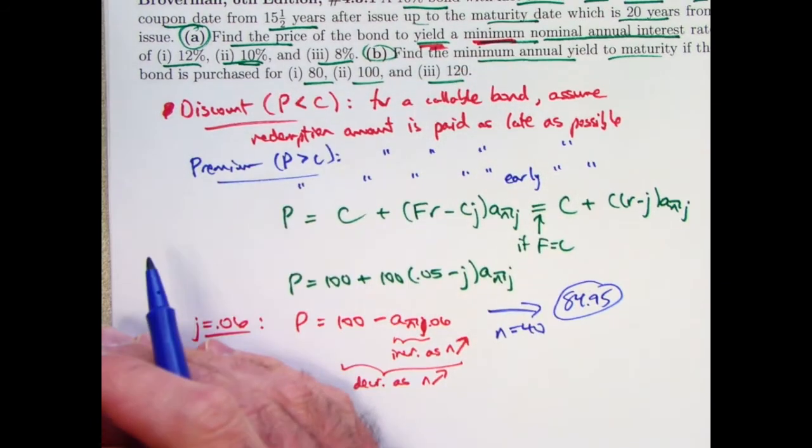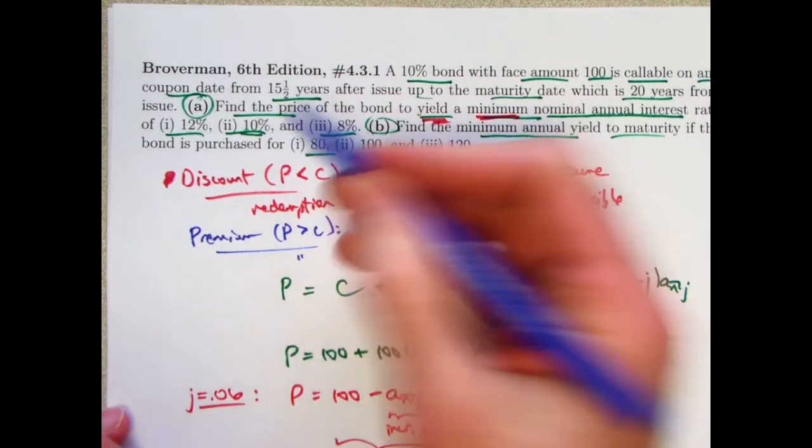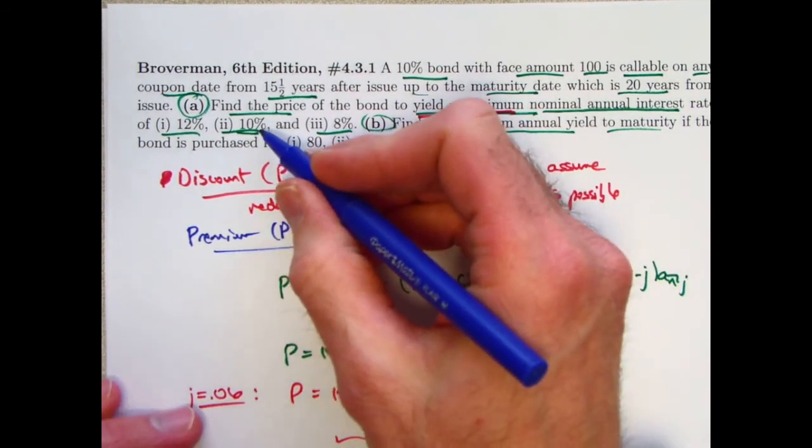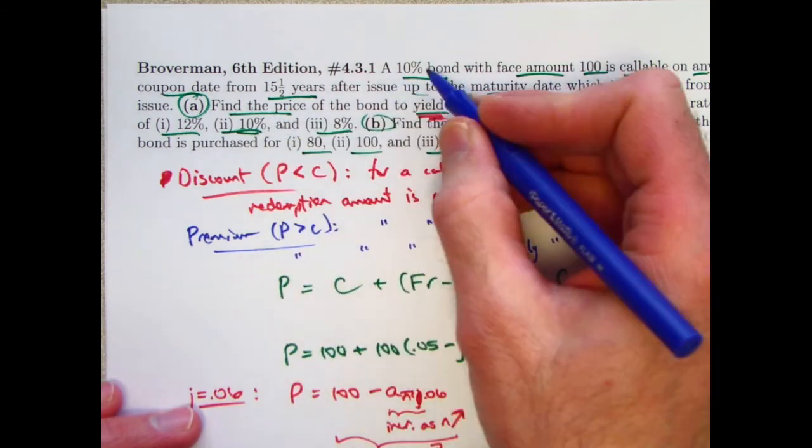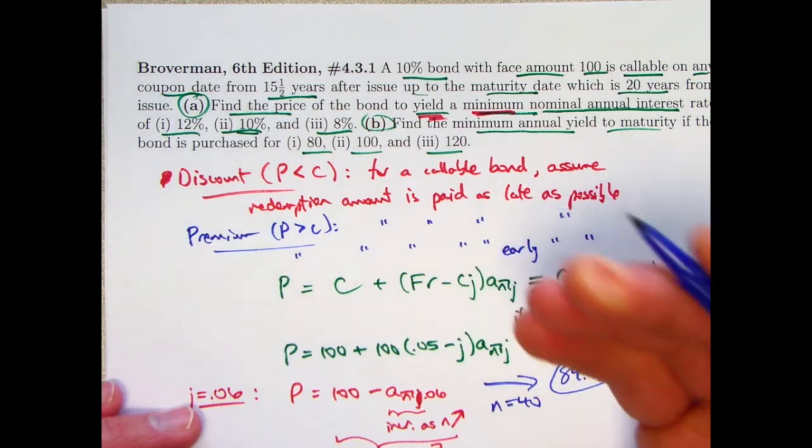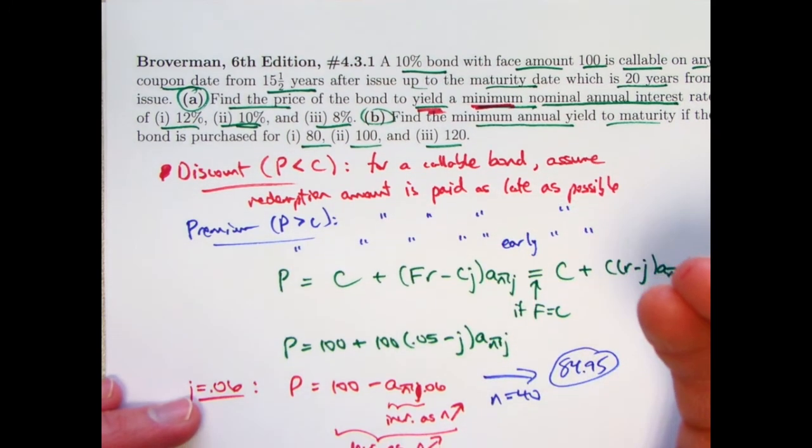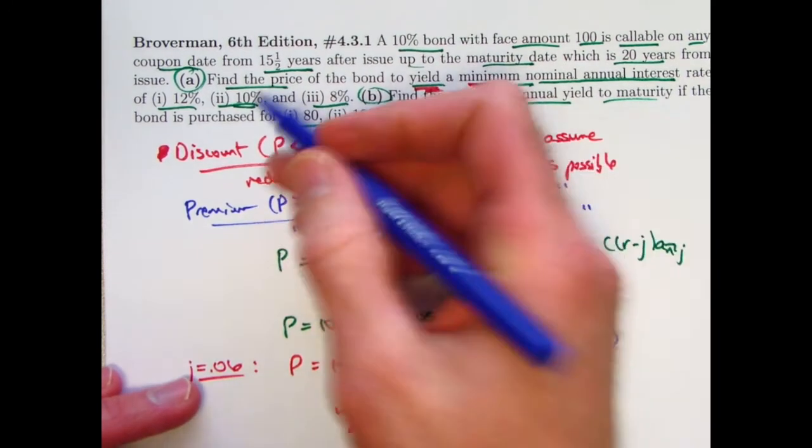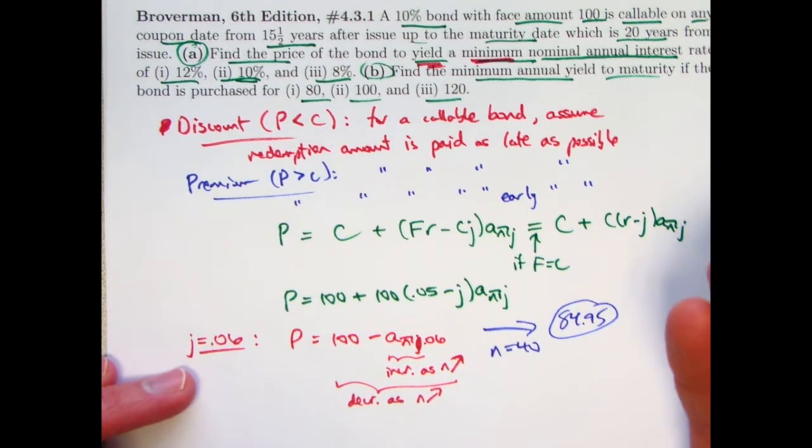The answer for subpart 2 is going to be 100. You don't even have to do any work. This yield rate is the same as the coupon rate. The price is going to be the same as the redemption value. The j of 10% would be the same no matter when it's redeemed.